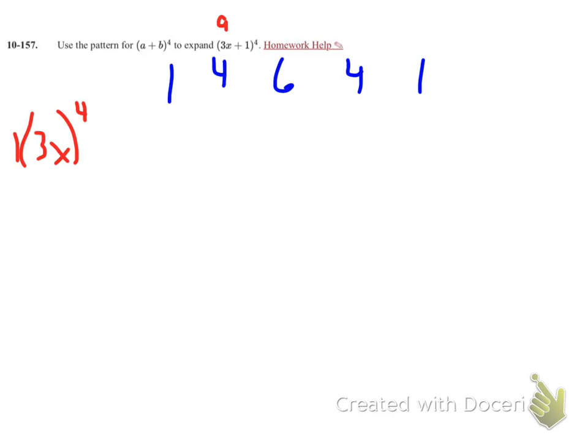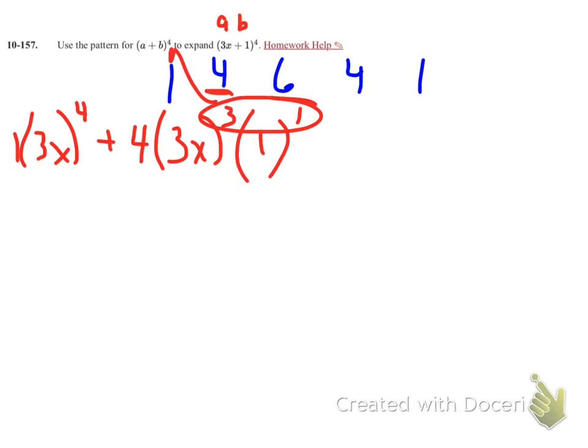Plus my next term has a coefficient of 4, my 3x to the 3rd now, and now I have my b value which is 1 to the 1st. Remember, these exponents have to add up to the 4 as well.